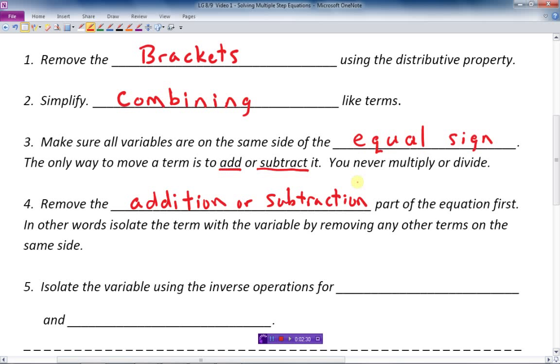Number five, isolate the variable using the inverse operations for multiplication and division. And we're going to go through all of these steps right away in these examples now.